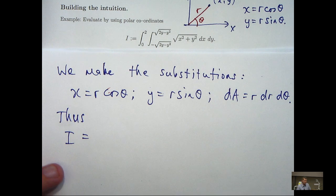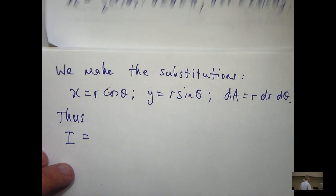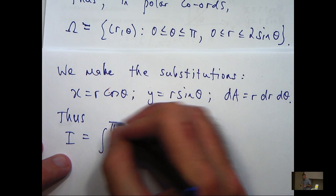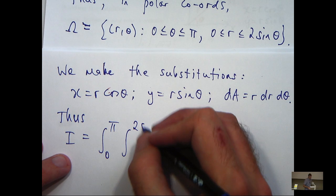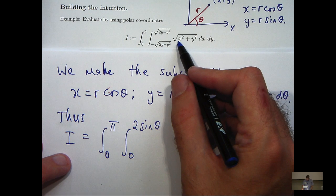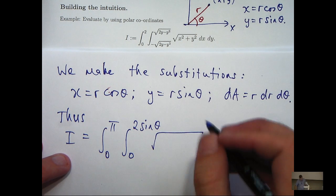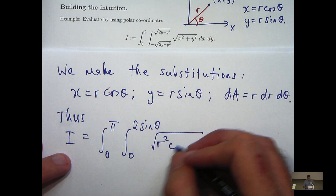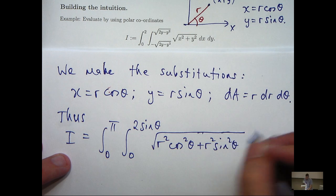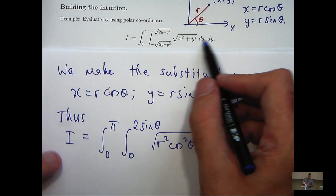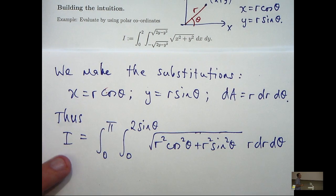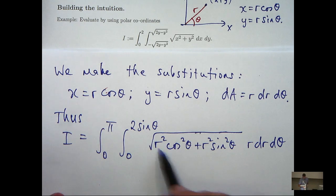So, we've got our limits of integration here. So, let's write them down. And then, we replace x with r cos theta, y with r sine theta. And we replace dA with r dr d theta.